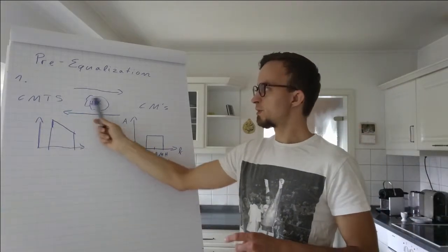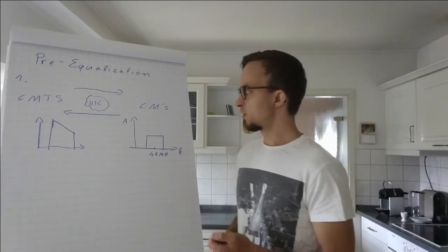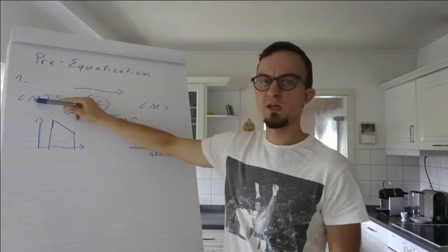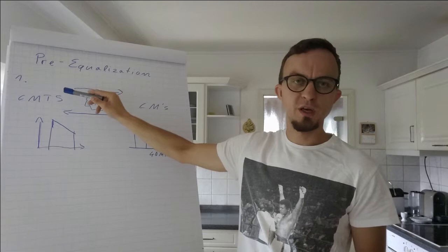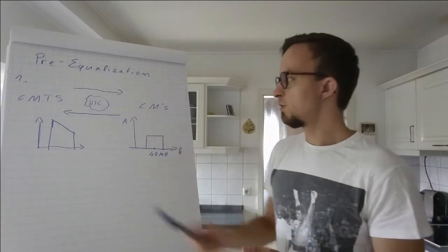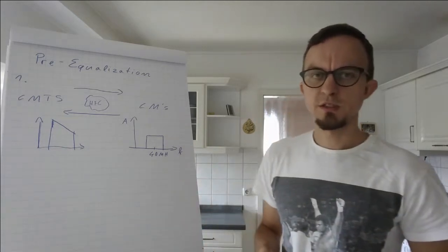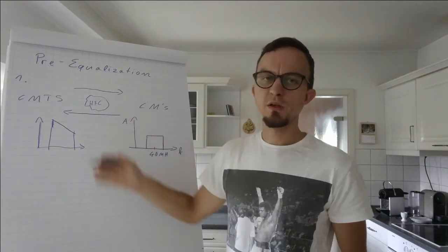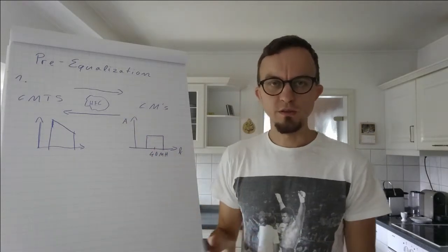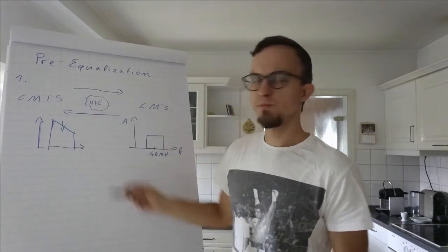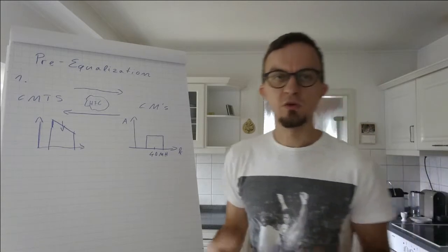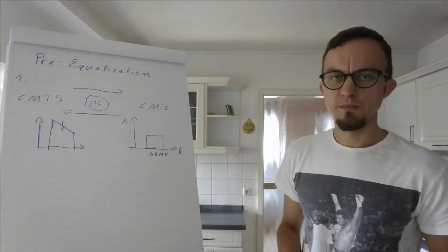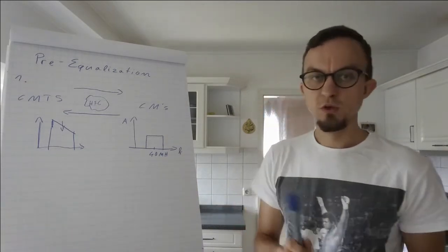Because of the impairments in the HFC network, it's more difficult for the cable modem termination system to interpret the signal. This leads to a loss in signal-to-noise ratio. Typically we can miss about 5 to 10 dB in signal-to-noise because it's complicated for the CMTS to decrypt or decode the upstream from the modem.